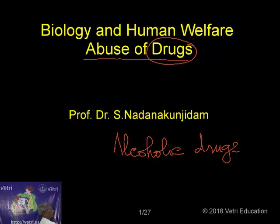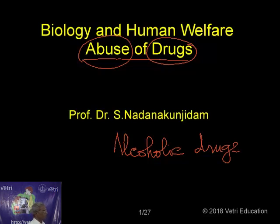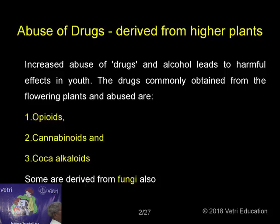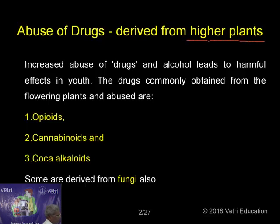People abuse alcohol and related materials, and as a result their health gets completely, totally spoiled. These alcoholic drugs — from where they are derived and how they are utilized by people — is what we are going to learn in this class. These drugs are derived from two sources: some from higher plants and some from lower plants, namely fungi.